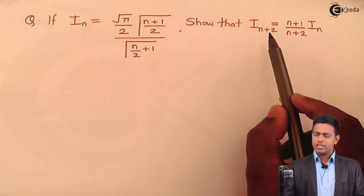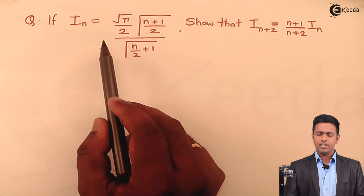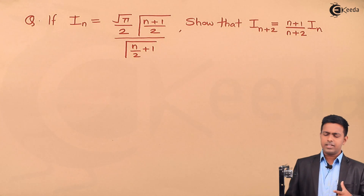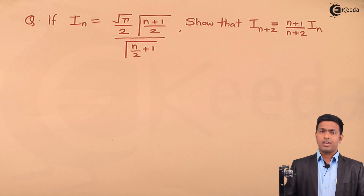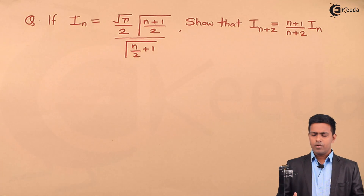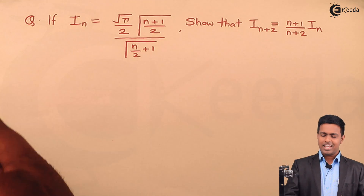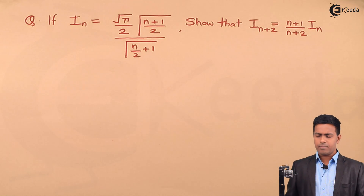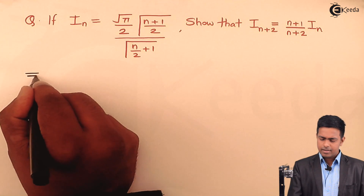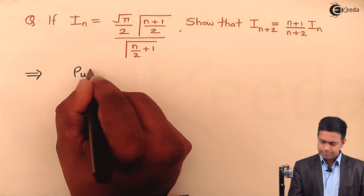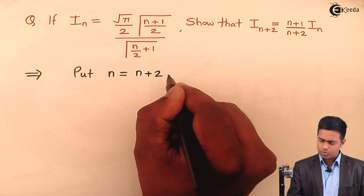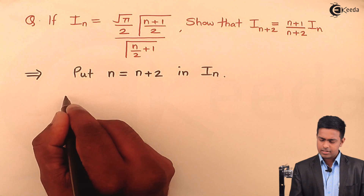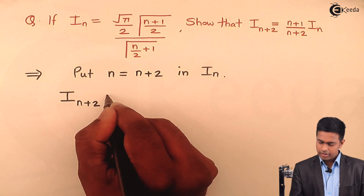We have the value of I(n) as √π/2 · Γ((n+1)/2) / Γ(n/2 + 1), and we have to show that I(n+2) = (n+1)/(n+2) · I(n). Now, I(n) is given, whereas I(n+2) we have to prove. For that, I will start with I(n+2) itself. To get I(n+2) from I(n), it's very simple — just replace n with n+2 in I(n).